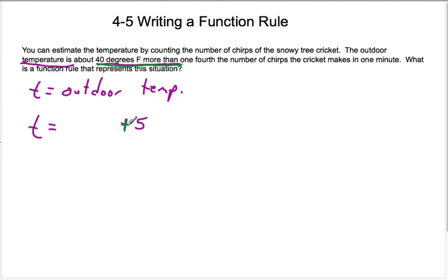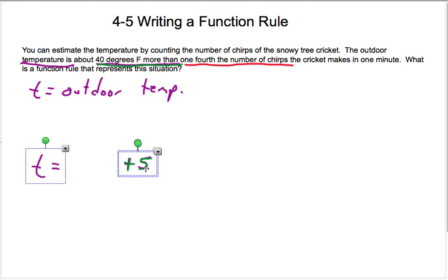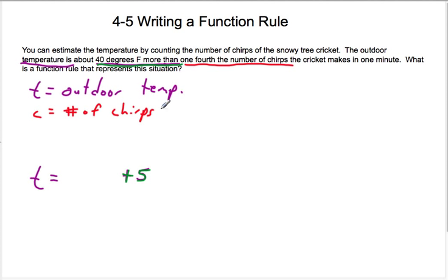Okay, maybe it would help if I did this in different colors. So that is the plus 5, right? Alright, more than one fourth the number of chirps that cricket makes in one minute. So we're going to need another variable here. So we'll say C equals number of chirps per minute. Okay, so we need one fourth the number of chirps. So one fourth C.